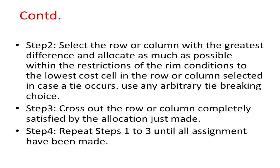Step two — select the row or column with the greatest difference and allocate as much as possible within the restrictions of the rim conditions to the lowest cost cell in that row or column. In case of a tie, use any arbitrary tie-breaking rule. Step three — cross out the row or column completely satisfied by the allocation just made. Step four — repeat steps one through three until all assignments have been made.